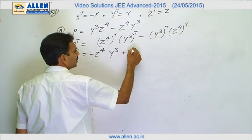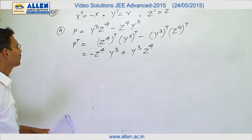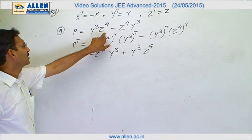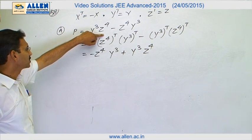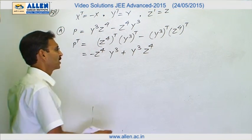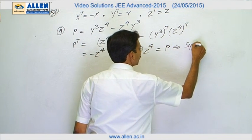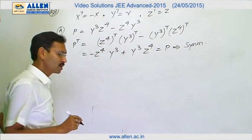a negative sign will be here. Similarly, it will become Y^q Z^4. We can see this is minus times of this matrix P or the same. This is the same one and this is also same. So we can say P transpose is P. So it is a symmetric matrix and we are looking for skew symmetric. So this is not the right option.